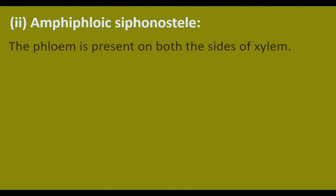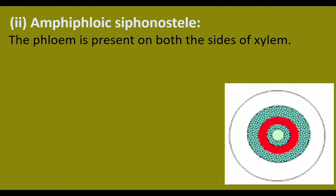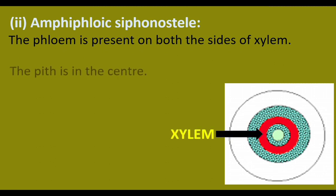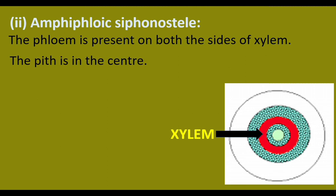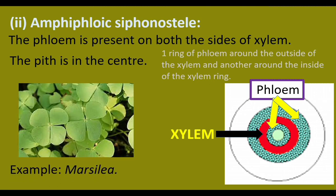Amphiphloic siphonostele: amphi means both, so phloem is present on both sides of the xylem — both inside and outside. The red-colored ring is xylem, pith is at the center, a ring of phloem is around the xylem, and another ring of phloem is inside the xylem ring. Example: Marsilea.